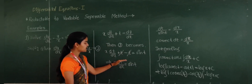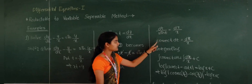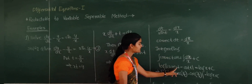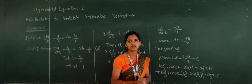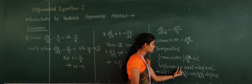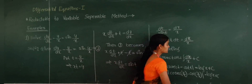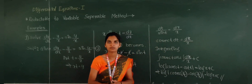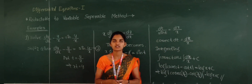From this substitution, we found the dy/dx value. After substituting the dy/dx and T values into the given differential equation, we separated the variables. Taking integration, we got the answer in terms of T and x. But we want the solution in terms of x and y, so at last we substituted back the T value. This is our required solution.